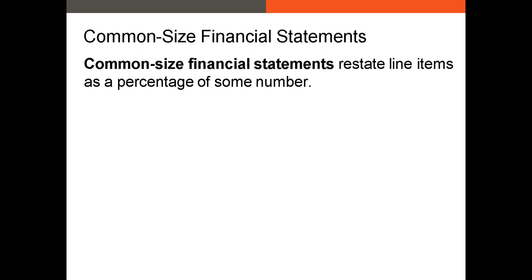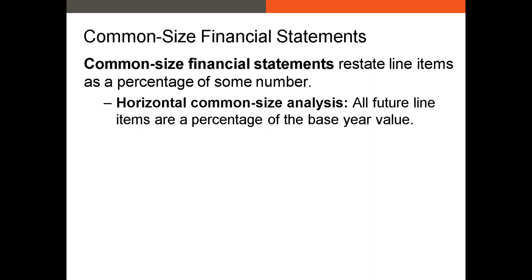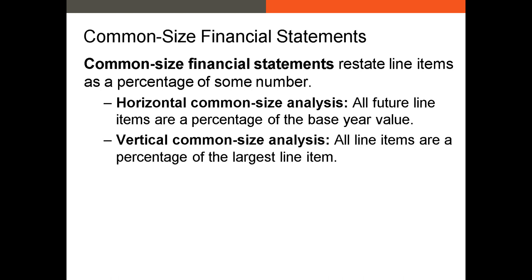In addition to annual reports and earnings call transcripts, we have other tools at our disposal. The most basic is common size financial statements. Once we have the financial statements, we can compare past performance of our firm to its historical performance in prior years, or compare it to the performance of direct competitors. In horizontal common size financial statement analysis, we scale all line items by the base year value. So if the base year total assets is 100%, every future year is going to be some percentage of that 100%.